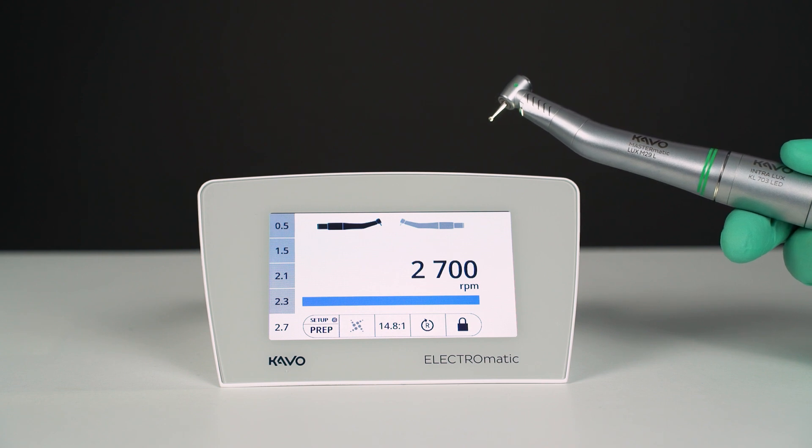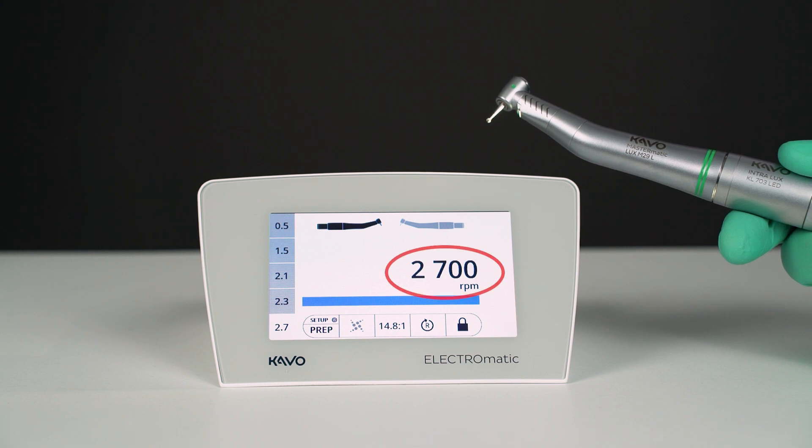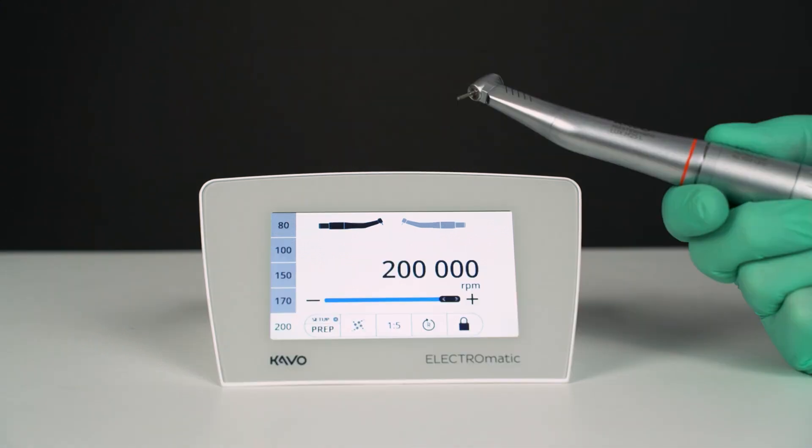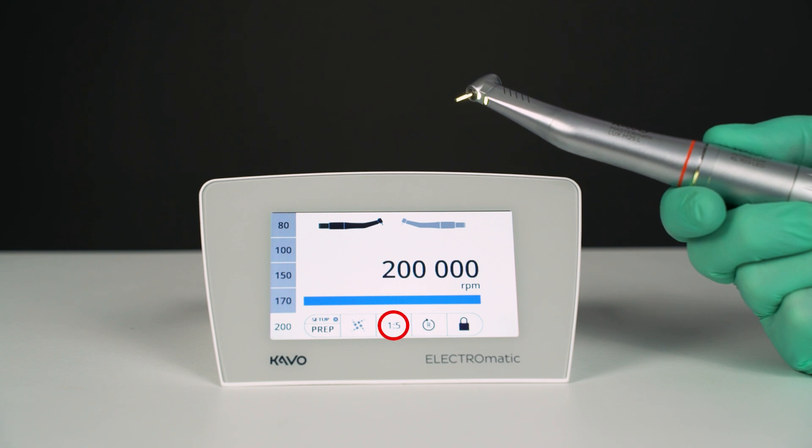The ratio reduces the motor of 40,000 rpm down to 2700 rpm burst speed. The speed increasing ratio of the Mastermatic M25L, which is 1-to-5, has to be set on the display.